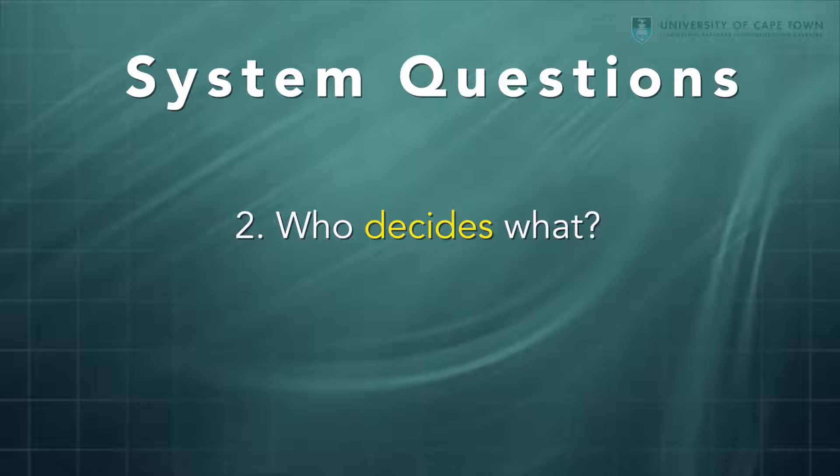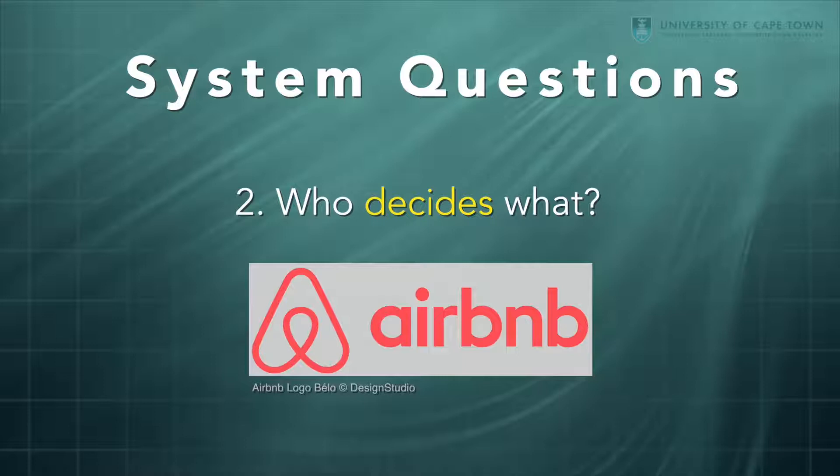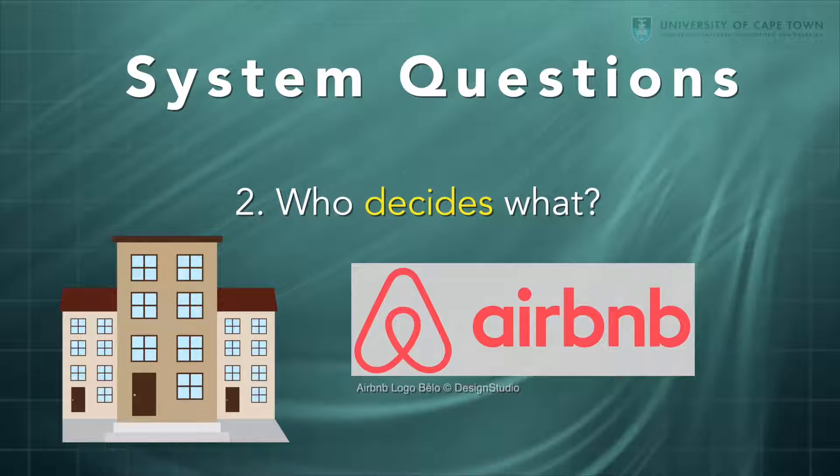The second question is, who decides what? This is really about authority and power. Let's take Airbnb and look at it as an example of challenging authority and power. On the surface, it's a matching platform connecting consumers, tourists with bedrooms. But really at the heart of the innovation is a challenge to the power and authority of the hotel industry and of governments who want to regulate hospitality.